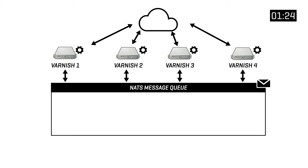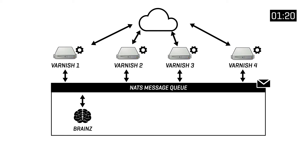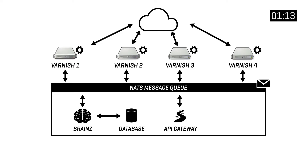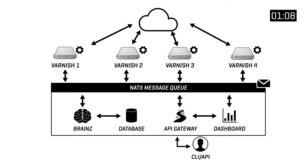NATS is just one component of the Varnish controller, but there are plenty of other modular components. The brains is an example of this — it is a central decision-making component that communicates with the relational database. There's also the API gateway that can be consumed by CLI or API clients, and a dashboard service that provides a graphical user interface for browsers.